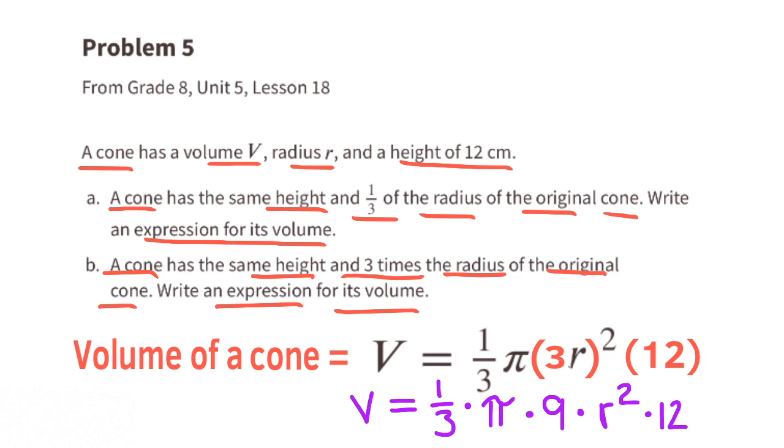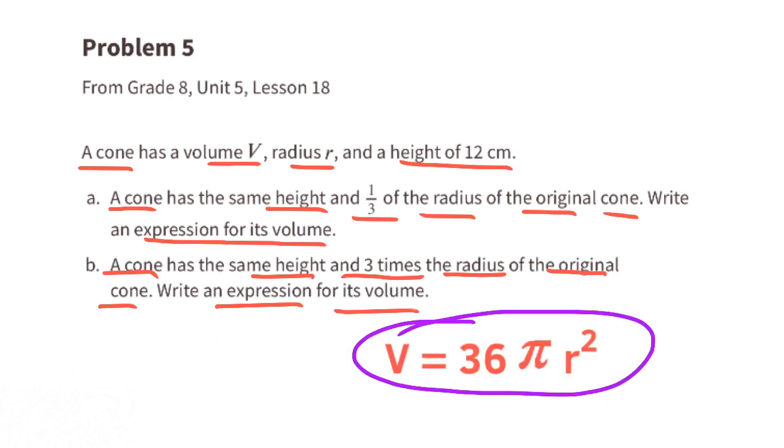Three r all squared becomes three squared or nine times r squared. Since the order of multiplication doesn't matter we can move the r squared to the end. One-third of nine is three. Three times twelve is 36. So the volume of this cone is 36 pi r squared.